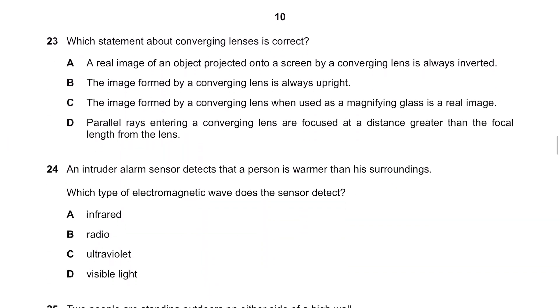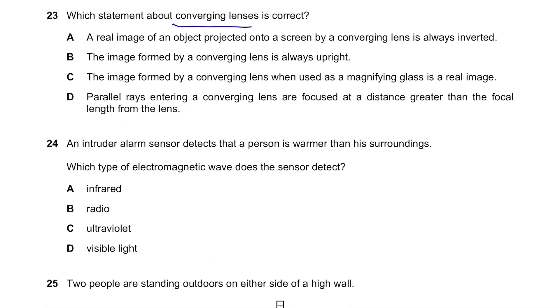Question 23. Which statement about converging lenses is correct? They're the ones that look like this. A real image of an object projected onto a screen by a converging lens is always inverted. Yeah, this is correct, we're lucky, but still, let's go through the other options.